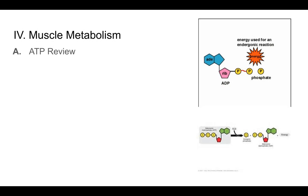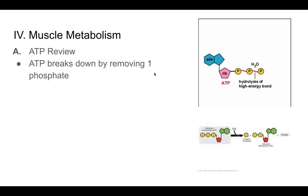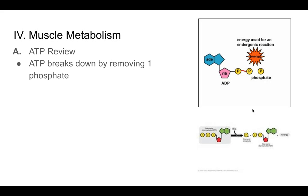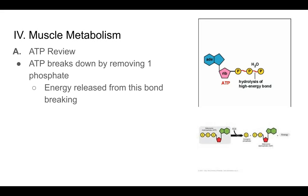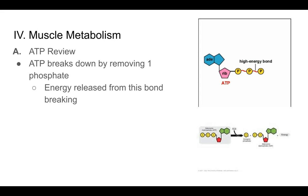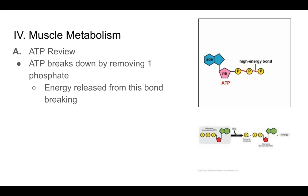We need to start with a reminder of ATP, that cellular energy molecule. ATP is broken down by removing one of its three phosphates. When the bond breaks and that phosphate group is removed, energy is released. What you are left with is a molecule missing a phosphate — instead of ATP, adenosine triphosphate, we now call it ADP, adenosine diphosphate, because it only has two phosphates.